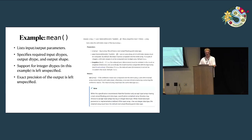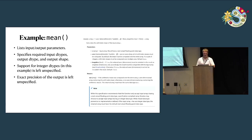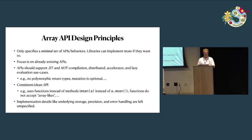Here's an example of what the specification looks like — this is the specification for the mean function. You can see it lists input and output parameters, required input dtypes, output dtypes, and output shape. There are a lot of things intentionally left unspecified: for example, the behavior on integer inputs is unspecified, and the exact precision of the output is unspecified. The general principle is that we're only specifying a minimal set of behaviors. Libraries can implement more functions than what's in the standard, or add additional keyword arguments.